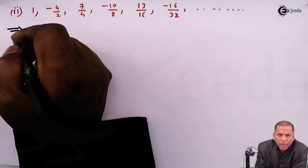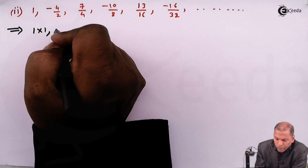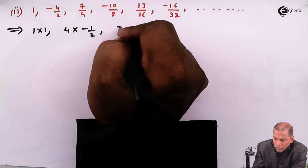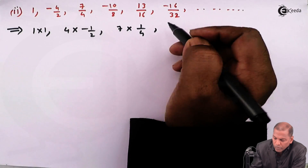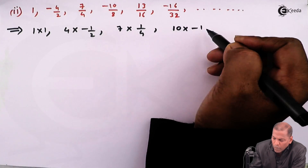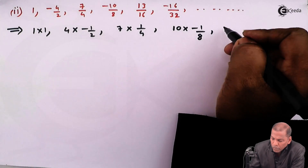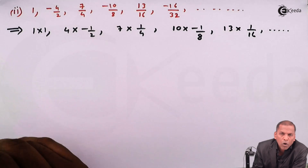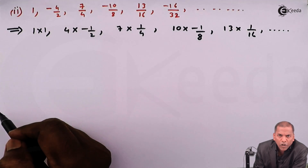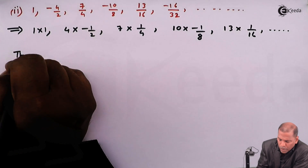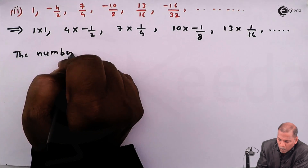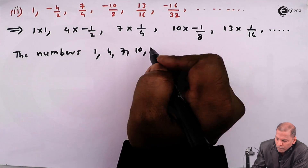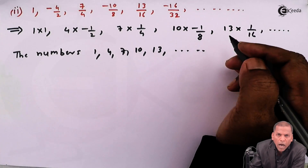First of all, the given terms can be written as 1·1, 4·(-1/2), 7·(1/4), 10·(-1/8), 13·(1/16), and so on. Now we consider the first terms only. The numbers 1, 4, 7, 10, 13, and so on are in AP.